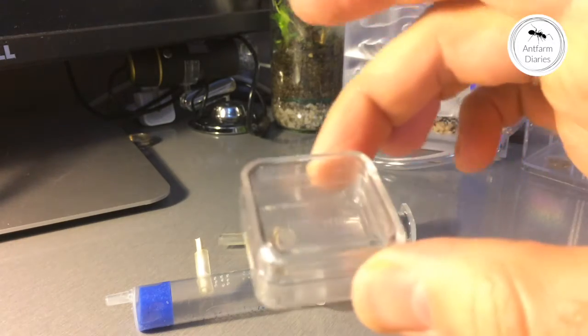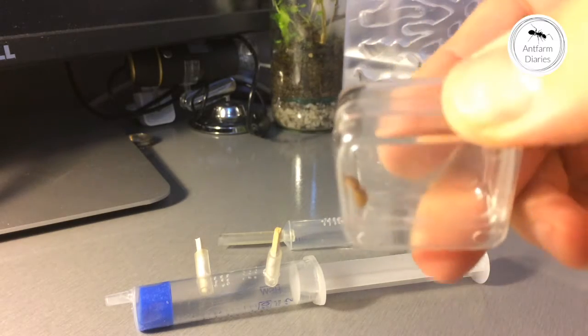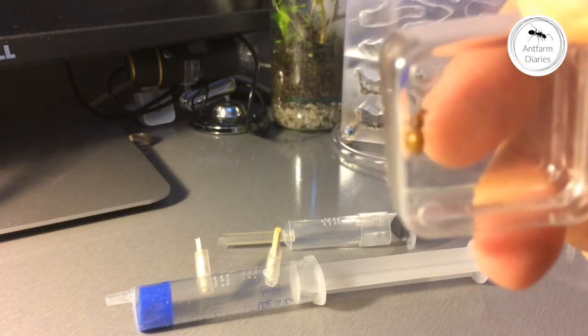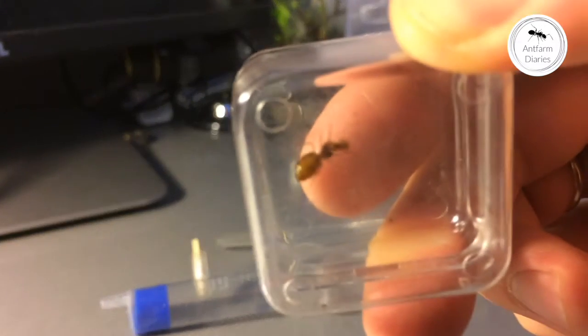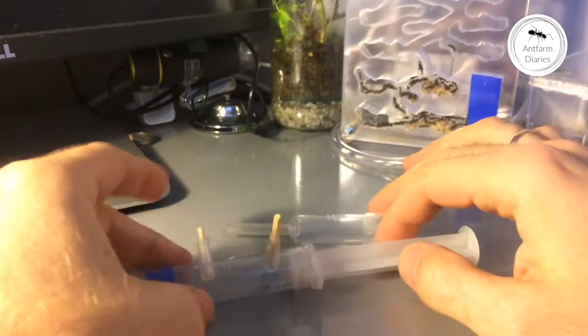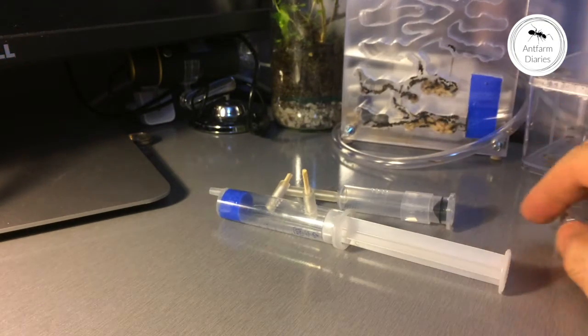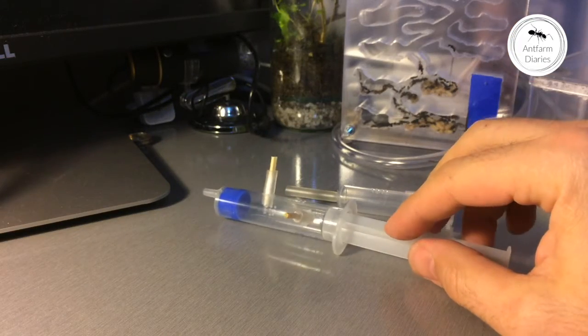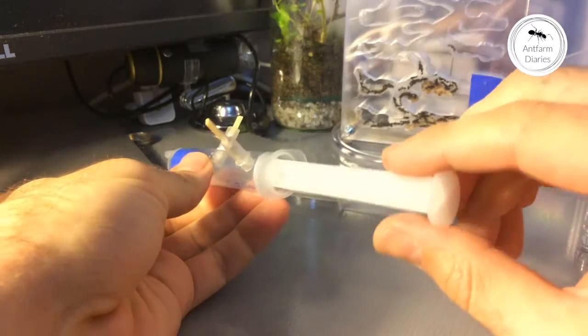So as you can see here we have a new ant queen, possibly it's Lasius Flavus. I already created an incubator for it, it's the old incubator from the Camponotus Valgus colony, so let's see how it's assembled.